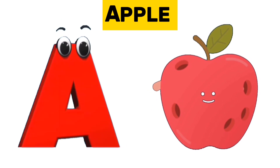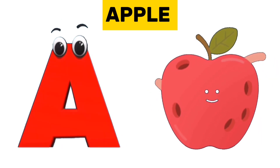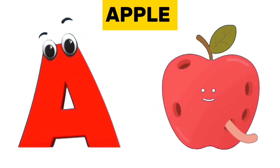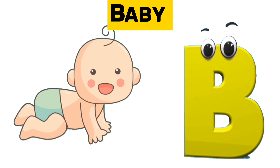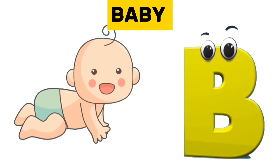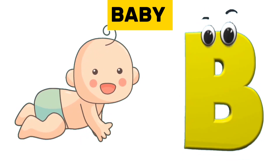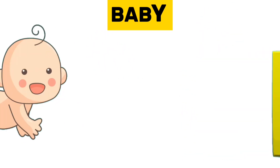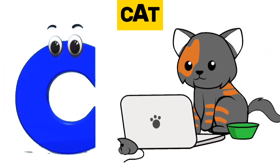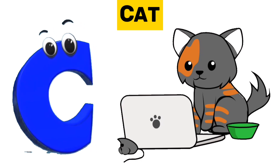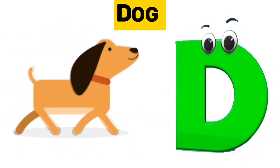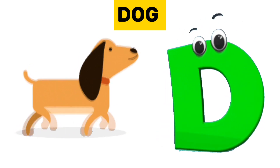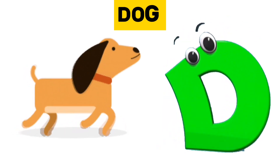A is for apple. A, a, apple. B is for baby. B, b, baby. C is for cat. C, c, cat. D is for dog. D, d, dog.